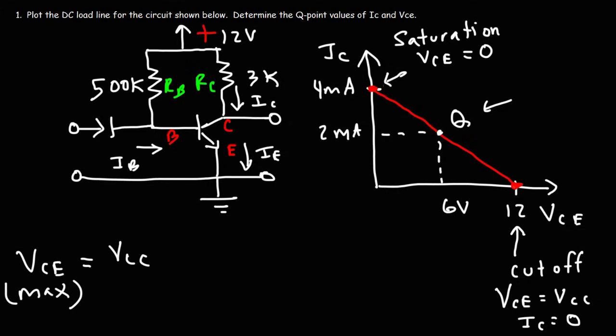So IC is 0 at the cutoff region. Under saturation, VCE is equal to 0 and IC is at its maximum value. At the cutoff region, IC is equal to 0, but VCE is at its maximum value — equal to the collector supply voltage.